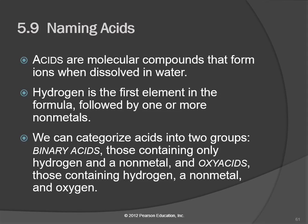Naming acids. We've talked about ionic compounds and molecular compounds. The last group we're going to learn to name are the acids. Acids are molecular compounds that form ions when you put them in water. And because they are not ionic compounds, we name them differently. We can identify acids from their formulas because hydrogen is the first element — you'll see hydrogen and then one or more nonmetals after that. We're not going to see any acids that have metals in them.